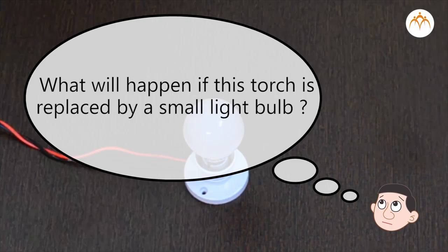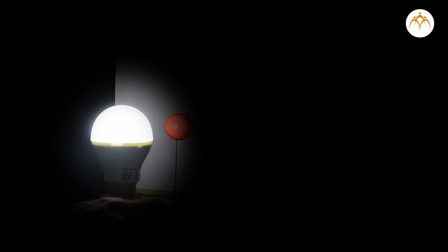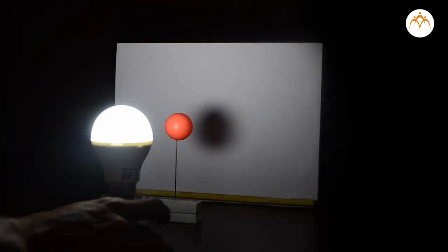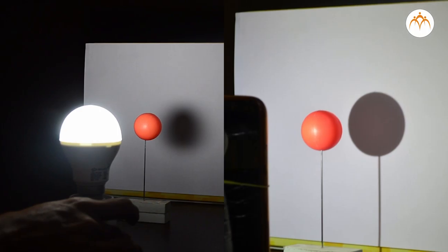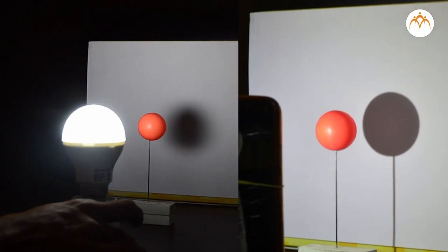What will happen if this torch is replaced by a small light bulb? Will I get the same shape of the shadow when bulb is the light source? Ball is receiving light from various directions. It was receiving light from just one source in case of torch.